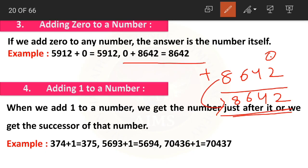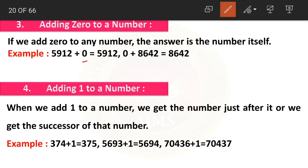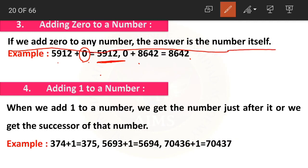We already know that whenever we add zero to a number the answer will be the number itself. Now we call this a property of addition — the third property: when we add zero to any number, the answer is the number itself.